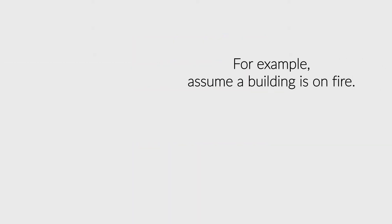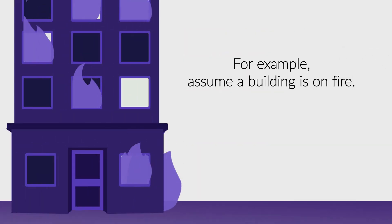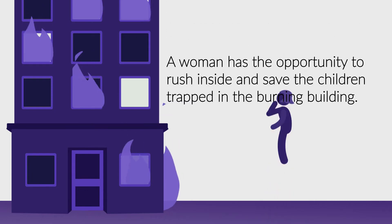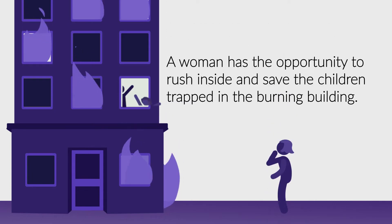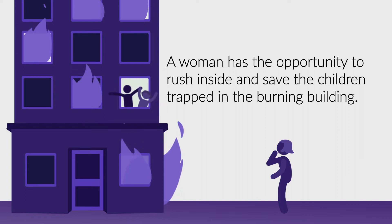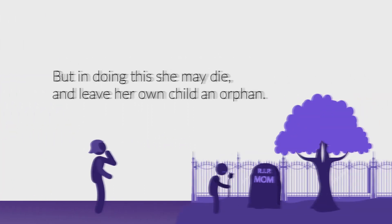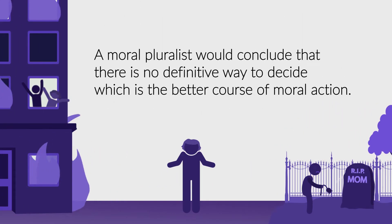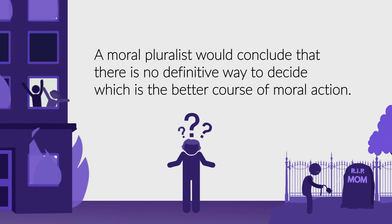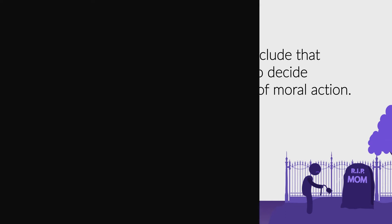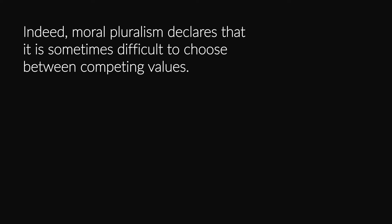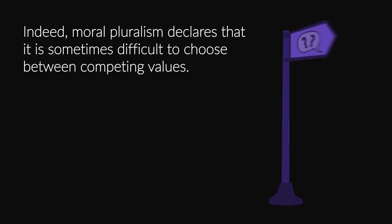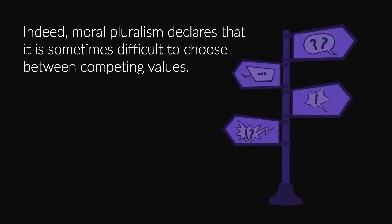For example, assume a building is on fire. A woman has the opportunity to rush inside and save the children trapped in the burning building. But in doing this, she may die and leave her own child an orphan. A moral pluralist would conclude that there is no definitive way to decide which is the better course of moral action. Indeed, moral pluralism declares that it is sometimes difficult to choose between competing values.